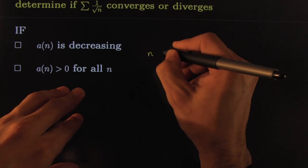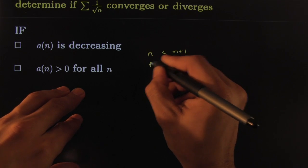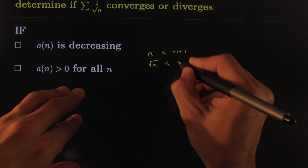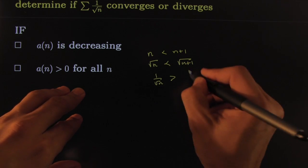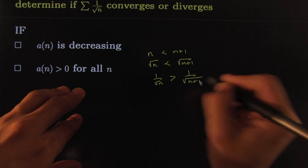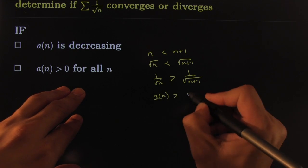Of course n is less than n plus 1. Square root of n is less than square root of n plus 1. 1 over the square root of n is greater than 1 over the square root of n plus 1.